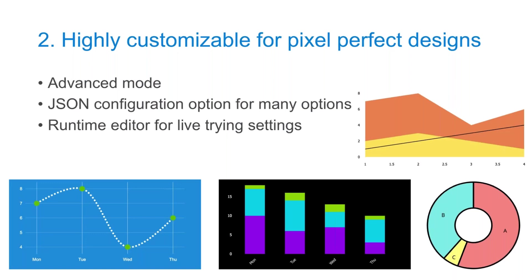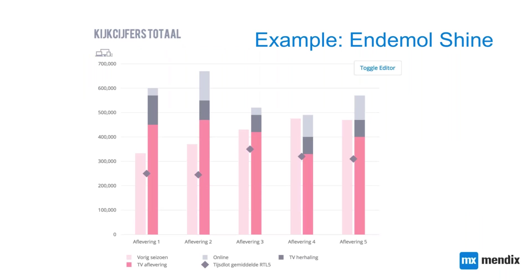We also talked about being highly customizable for pixel-perfect design. Here you see some examples of differently styled charts. All Plotly charts are based on a JSON configuration, and we created a runtime editor in which you can live-edit your settings and immediately see the result. It uses a CSS-like approach, allowing you to easily customize your charts, and then copy those settings into your desktop modeler.